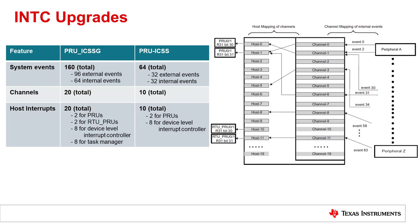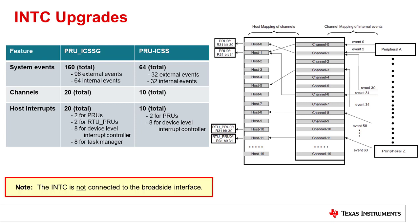While on the topic of event management, let's quickly talk about the interrupt controller available in both PRU ICSS and PRU ICSSG. The INT-C interrupt controller is not considered an accelerator as it is not connected to the broadside interface. However, there were upgrades made to this submodule in PRU ICSSG. The number of supported system events, channels, and host interrupts was increased compared to the previous PRU ICSS. This upgrade was made to better support the additional cores in the PRU ICSSG. There are also host interrupts added to issue an event to the new task manager.